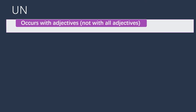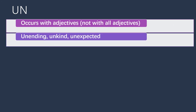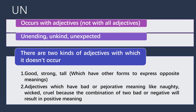First, let's focus on 'un.' The prefix 'un' mostly occurs with adjectives, like 'unending,' 'unkind,' and 'unexpected.' However, there are some adjectives with which the prefix 'un' doesn't occur. For example, words like 'good,' 'strong,' and 'tall' — the prefix 'un' doesn't occur with these because these words already have different forms to express their opposite meaning.